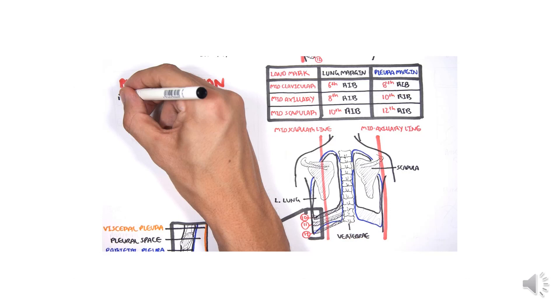So as we said, the inferior margin of the lung is two ribs higher than that of the pleura.